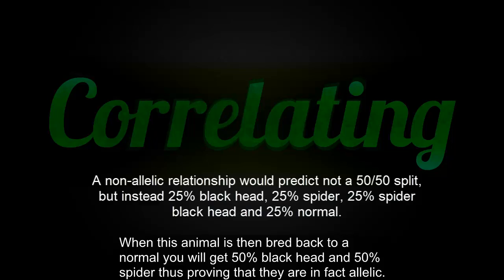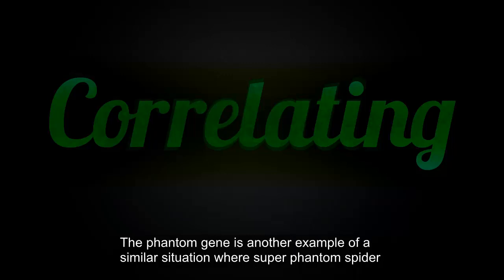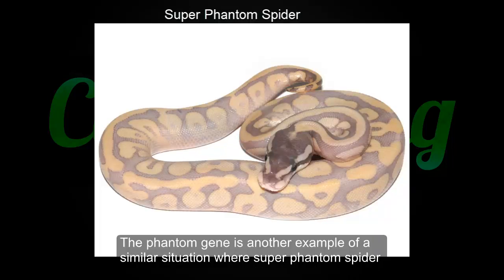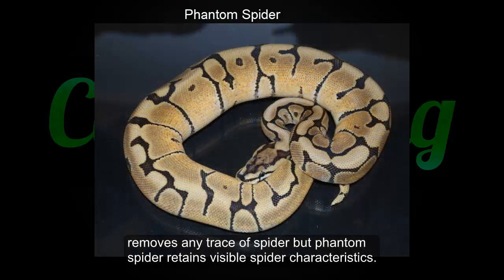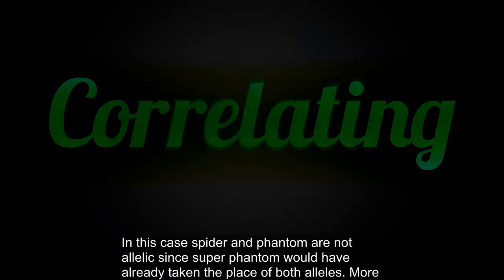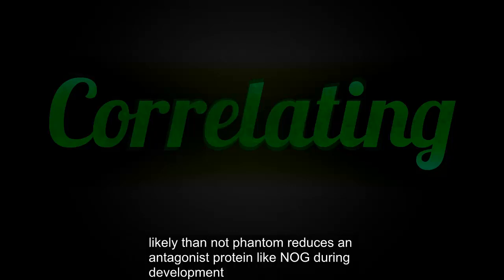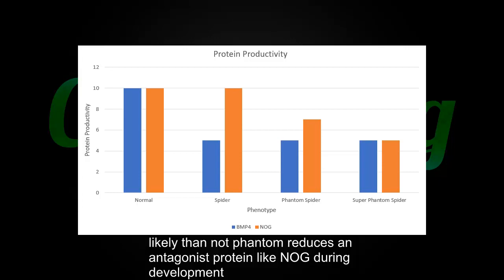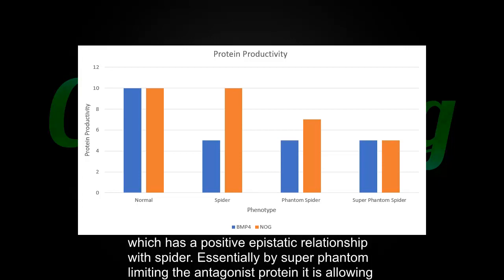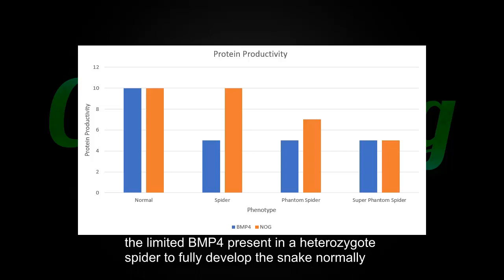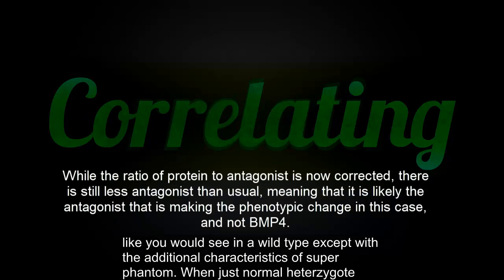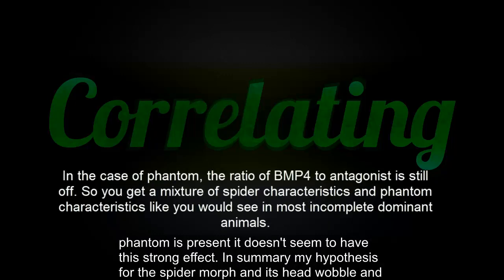The phantom gene is another example of a similar situation, where a super phantom spider removes any trace of spider but phantom spider retains visible spider characteristics. In this case spider and phantom are not allelic, since super phantom would have already taken the place of both alleles. More likely than not, phantom reduces an antagonist protein like NOG during development, which has a positive epistatic relationship with spider. Essentially, by super phantom limiting the antagonist protein, it is allowing the limited BMP4 present in a heterozygote spider to fully develop the snake normally — like you would see in a wild type — except with the additional characteristics of super phantom. When just normal heterozygote phantom is present, it doesn't seem to have this strong effect.